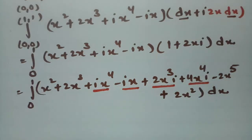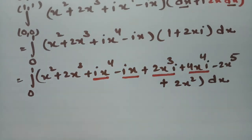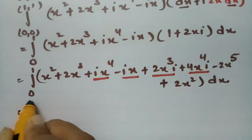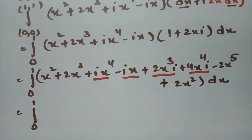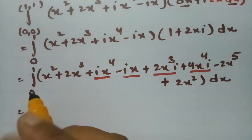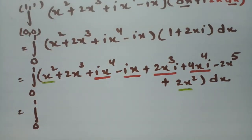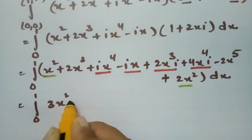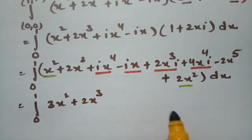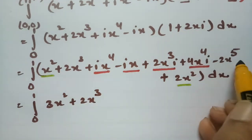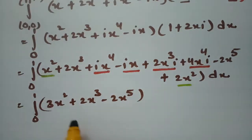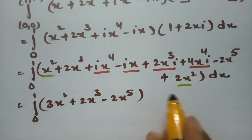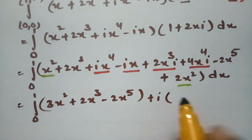Separating real and imaginary terms: the real terms collected are x² + 2x² = 3x², plus 2x³, minus 2x⁵, giving real part 3x² + 2x³ − 2x⁵. Taking i common from the imaginary terms gives i(5x⁴ + 2x³ − x).